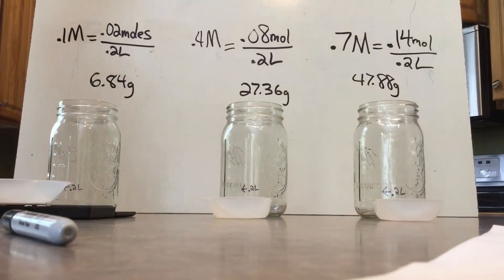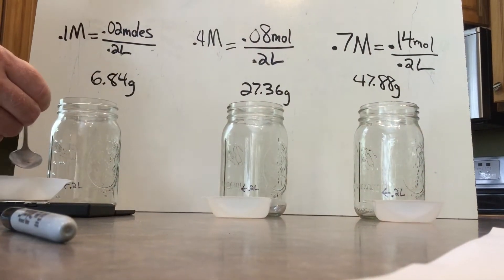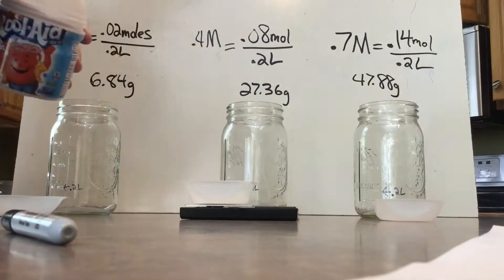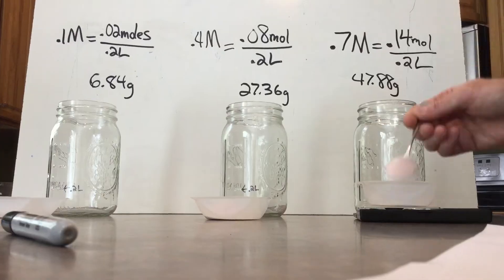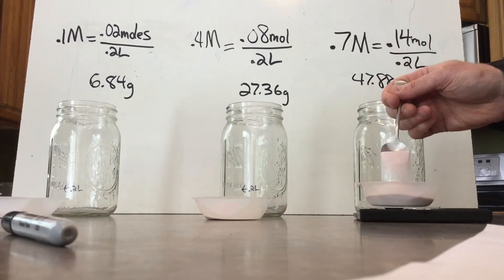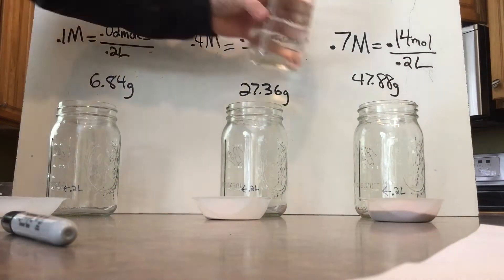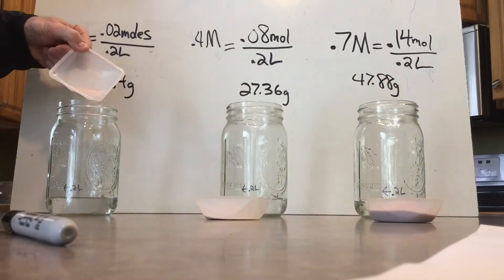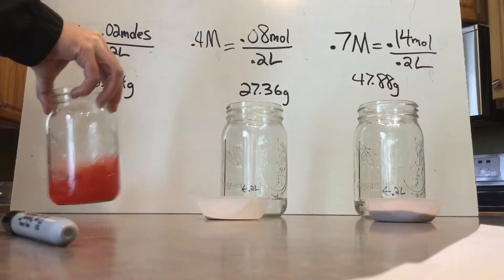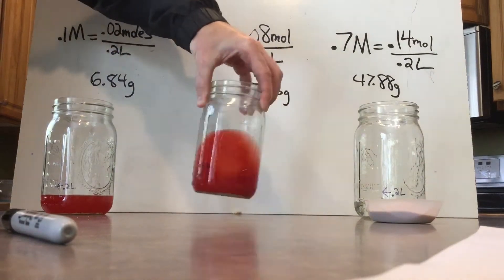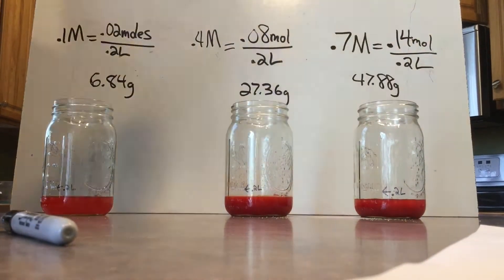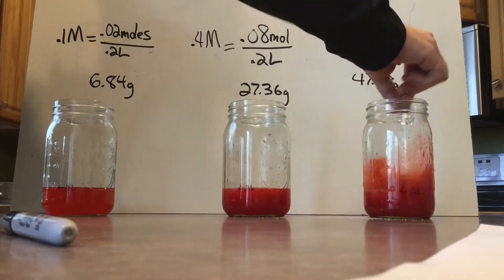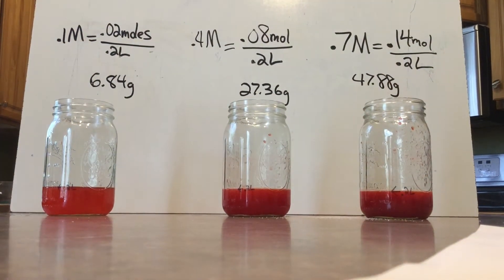Here we have the jars we'll use to make each of the three solutions. I'll start by measuring out 6.84 grams, 27.36 grams, and 47.88 grams. Next, I'll add a little bit of water to each jar, then add the solute — the sugar, the sucrose, the Kool-Aid — and stir it to get it to dissolve. Finally, I'll add enough water to bring each solution up to 0.2 liters.